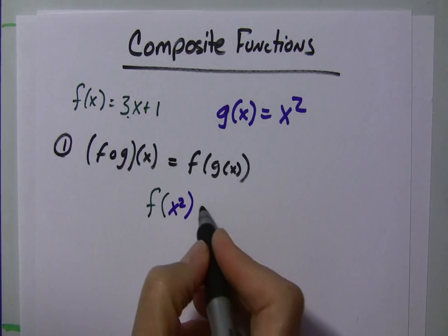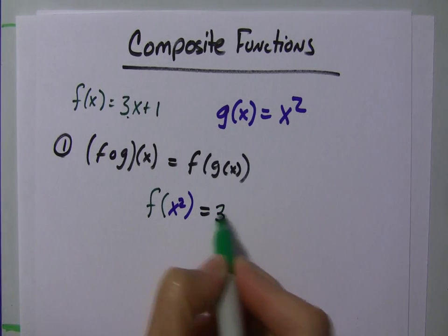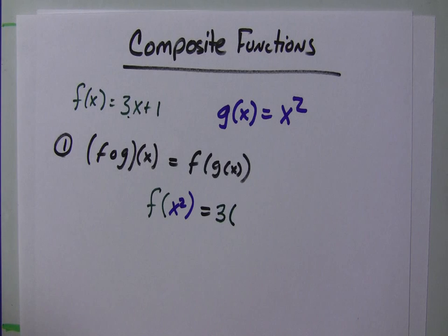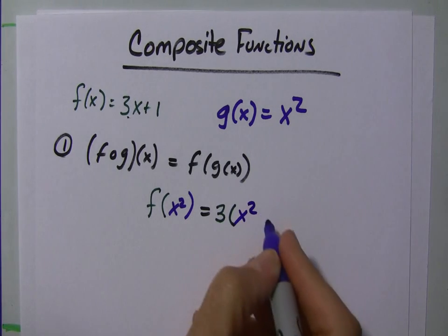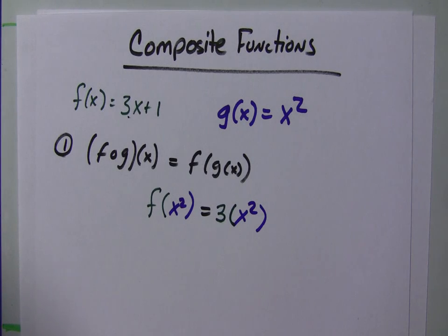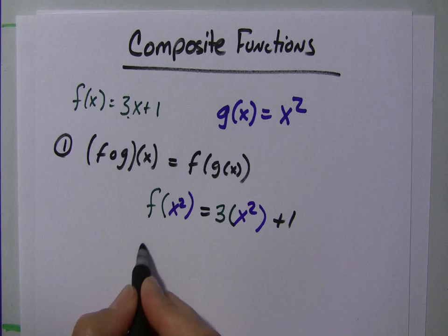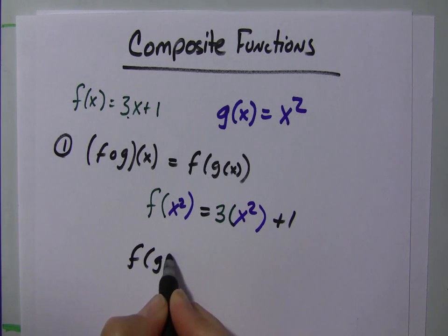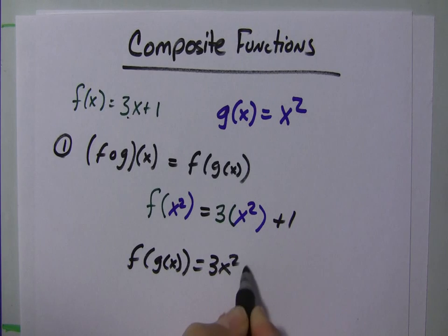And that looks like it's going to be 3 times x squared plus 1. So, f of g of x equals 3x squared plus 1.